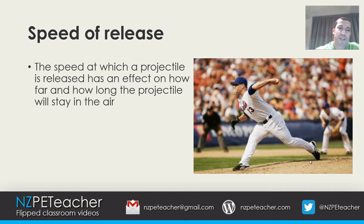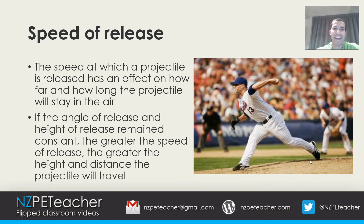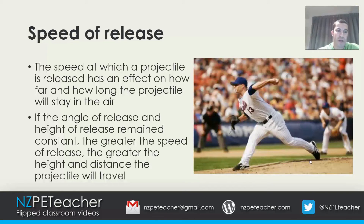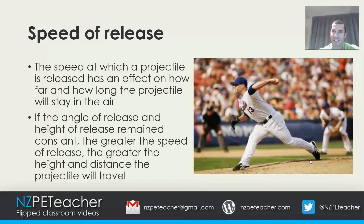The speed at which a projectile is released affects how far and how long the projectile will stay in the air. If the angle and height of release remain constant, a greater speed of release equals greater height and distance travelled. Once a projectile has been released, its horizontal velocity remains constant for the duration of the flight. In sports that require projectiles to be thrown a great distance, athletes try to generate as much velocity as possible by releasing the projectile with the greatest possible amount of force.